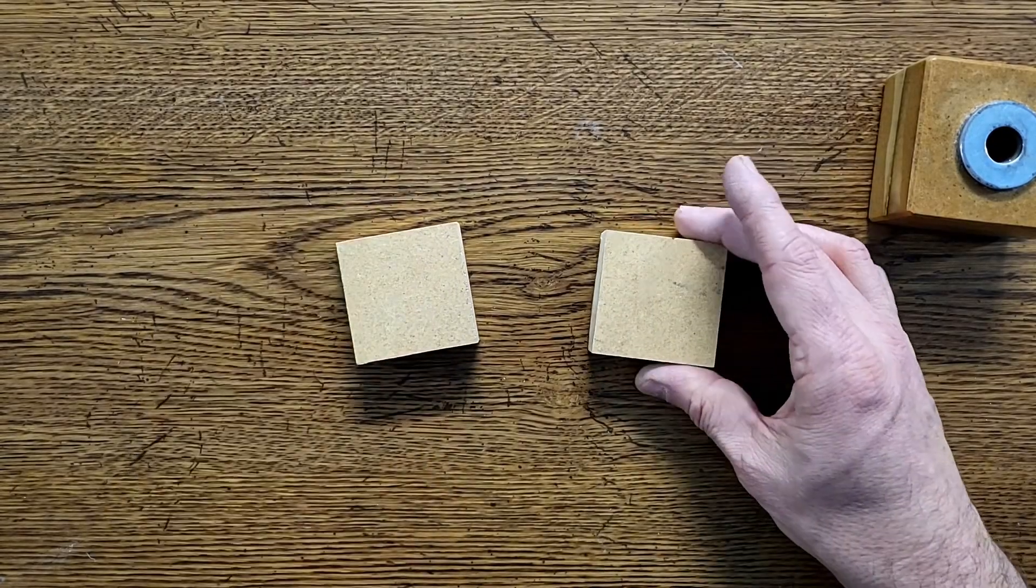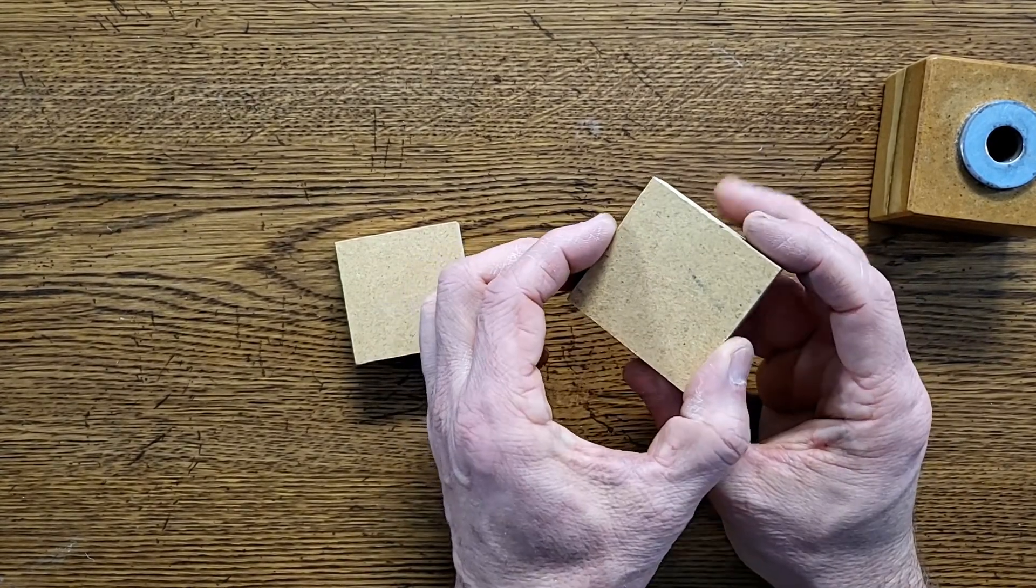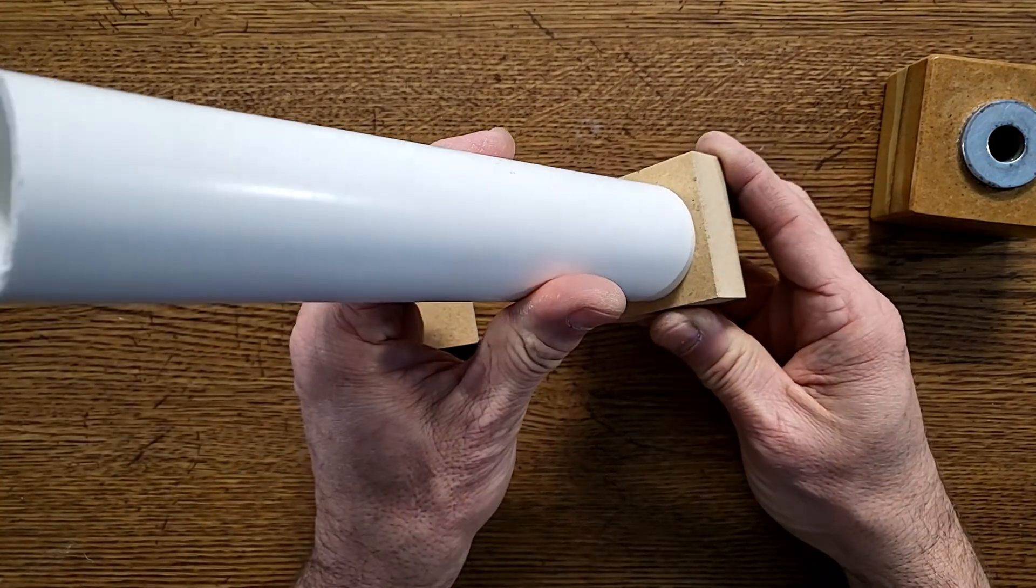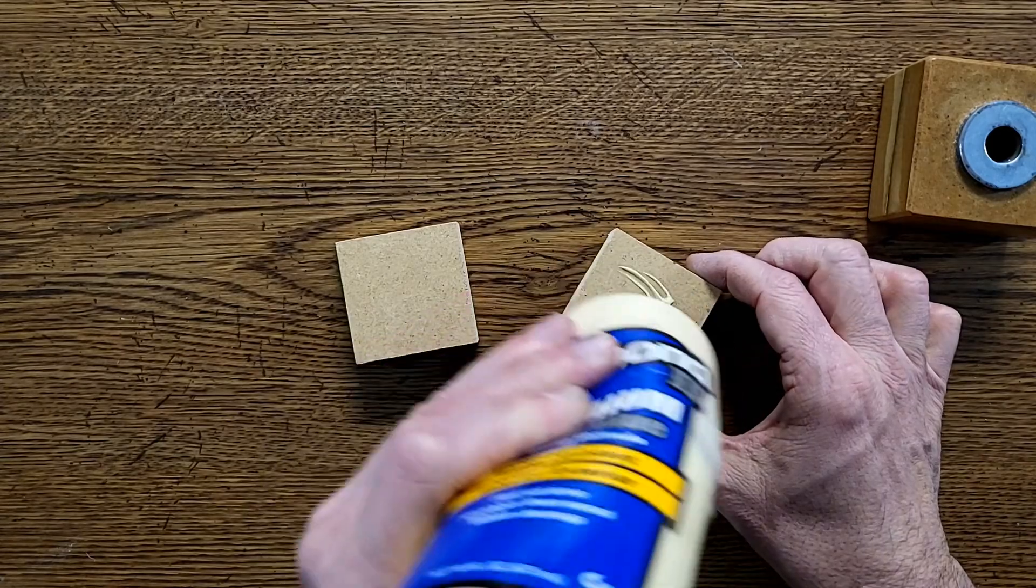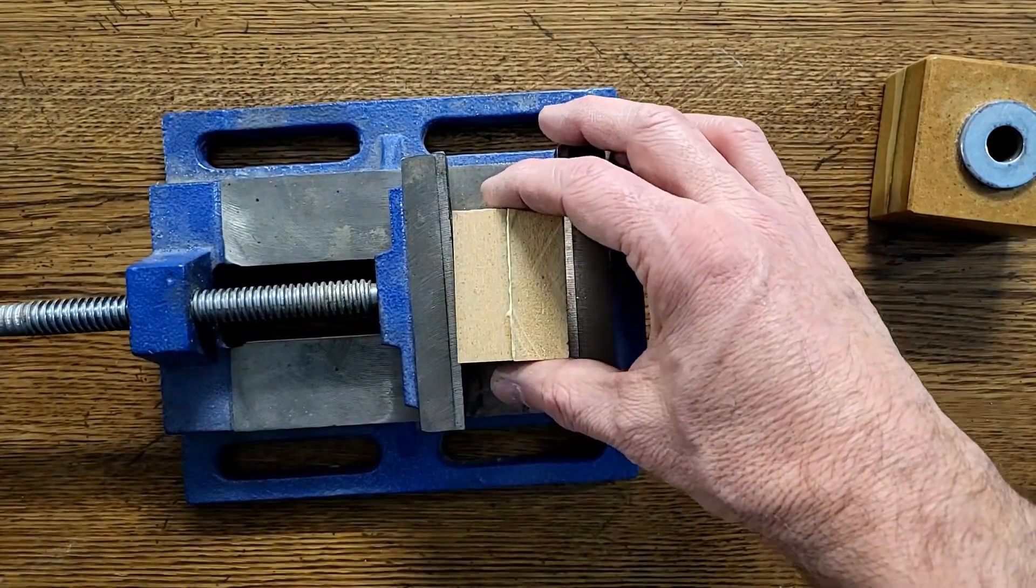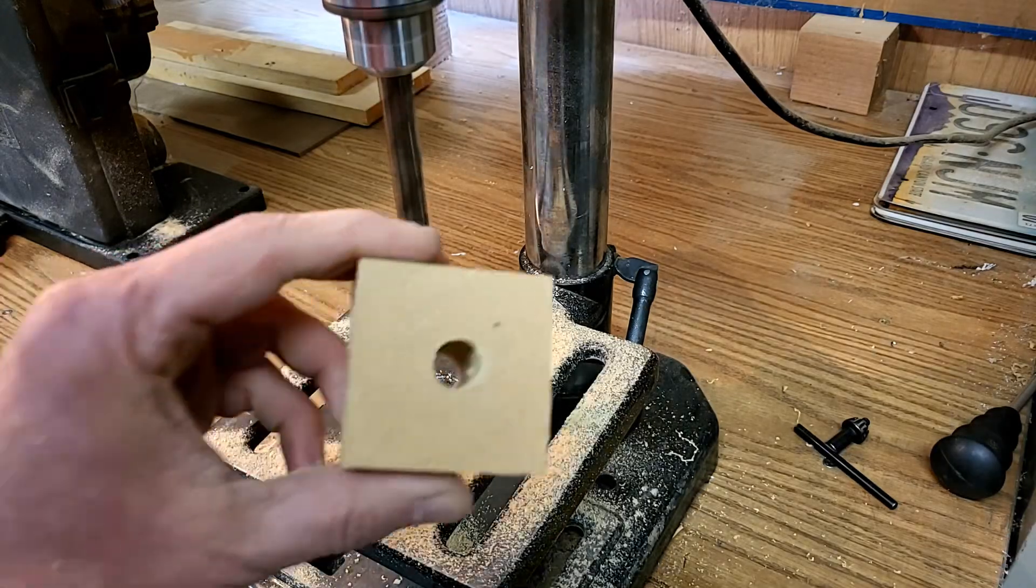Next we need two small pieces of three quarter inch MDF. The size of these is not too important as long as they're bigger than the outside diameter of the inch and a quarter PVC pipe. Put a small amount of wood glue on one piece and clamp the two parts together and let the glue dry for at least 30 minutes.